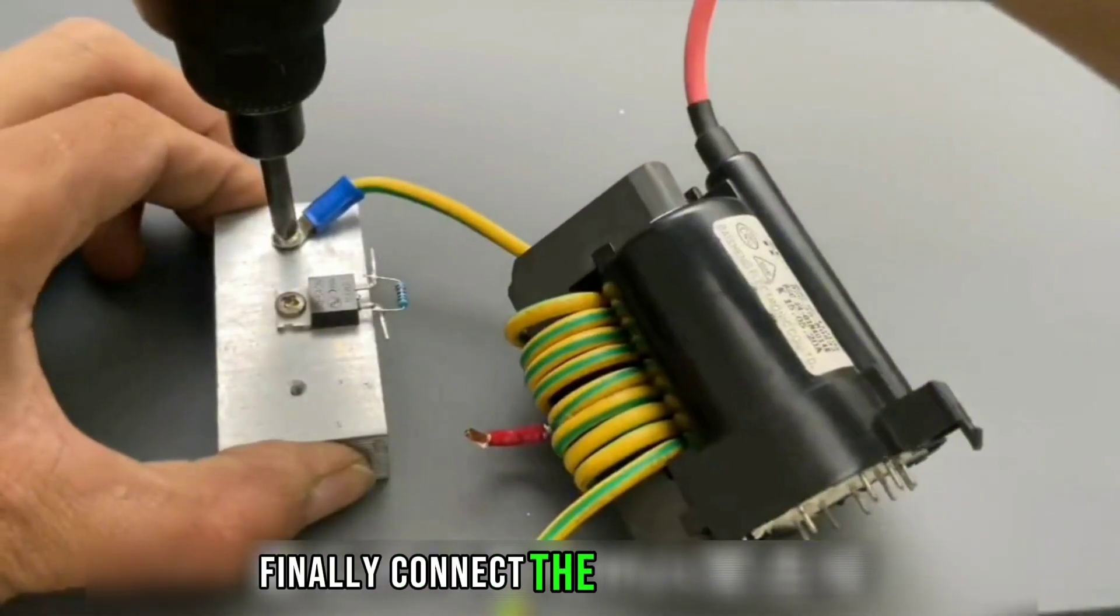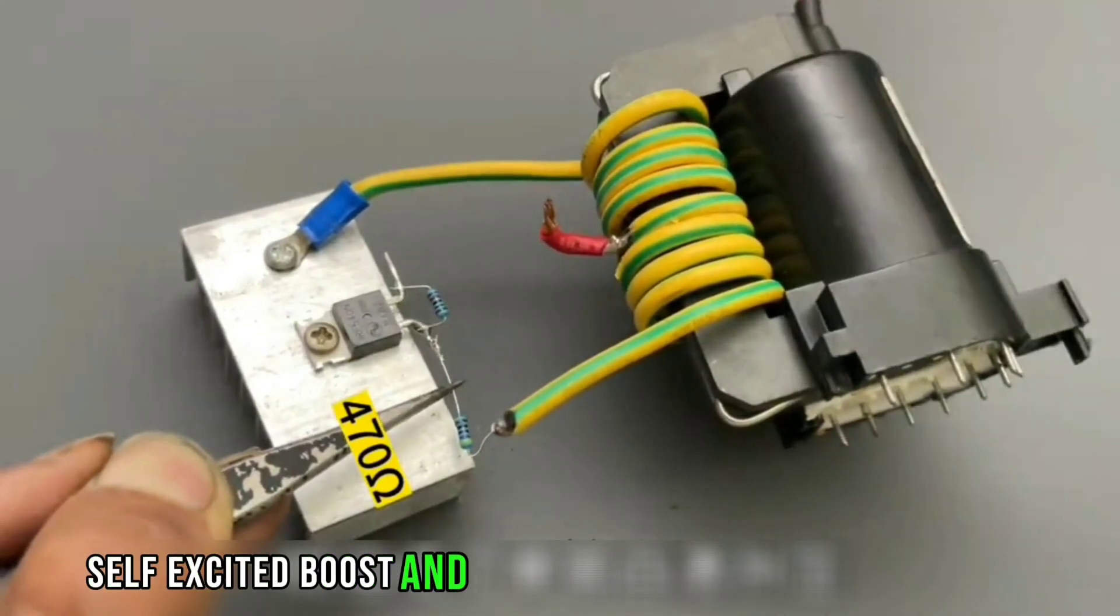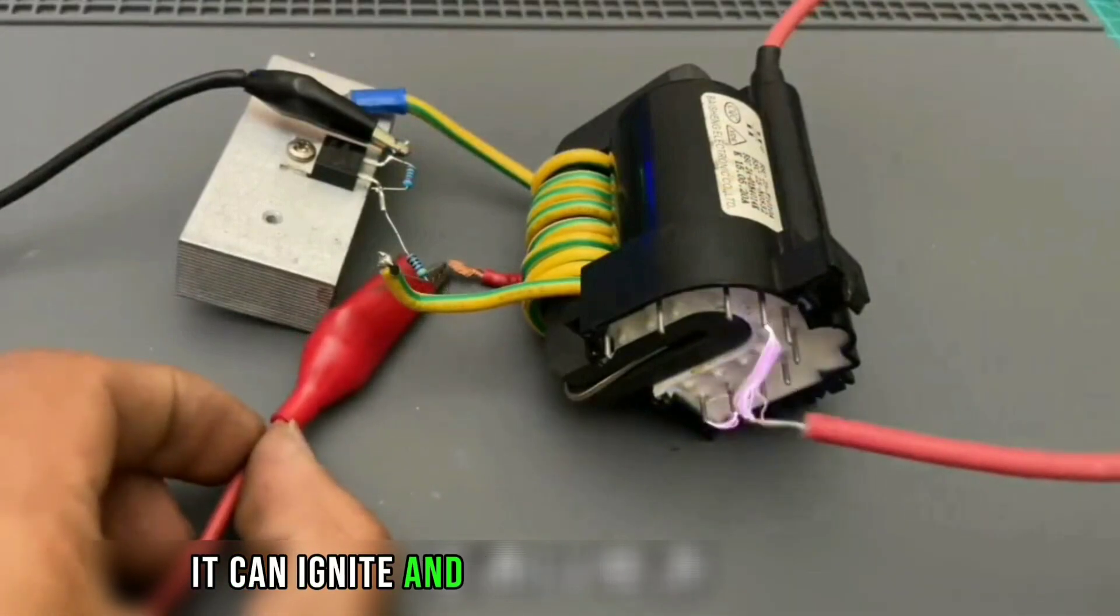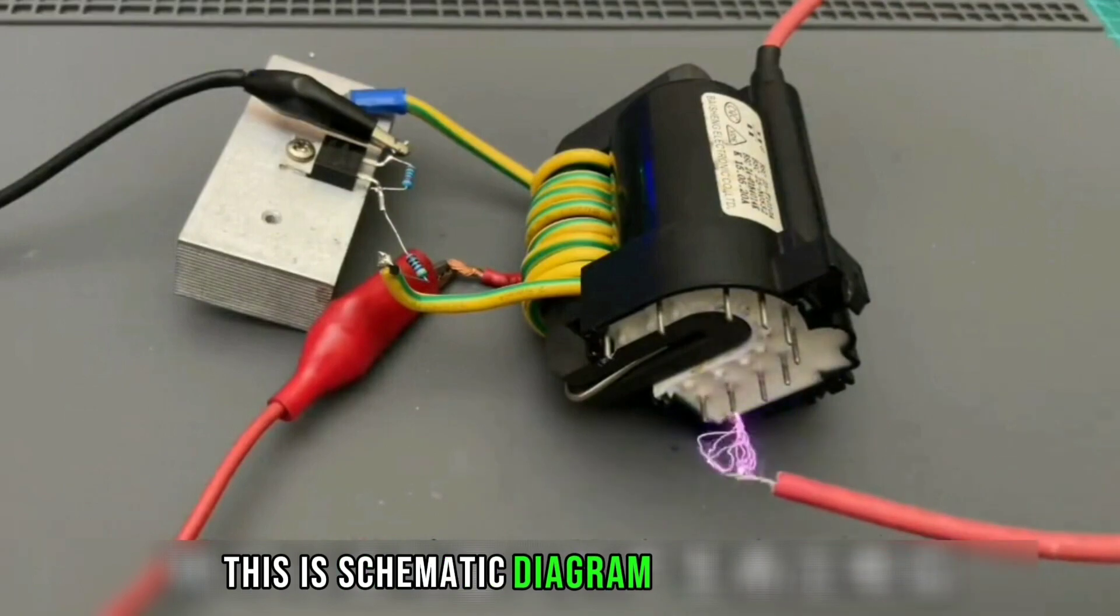Finally, connect the coil and MOSFET. It forms a single-tube self-excited boost circuit. Connect to a 6V power supply input. It can ignite and generate high-voltage arcs. This is the schematic diagram of this circuit.